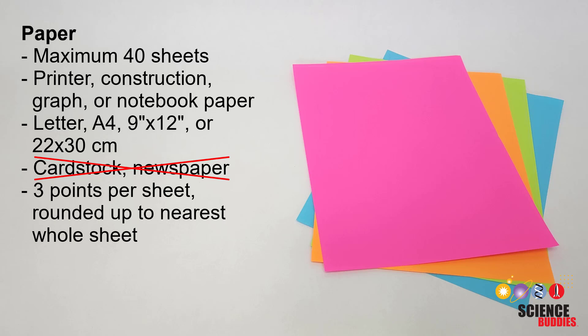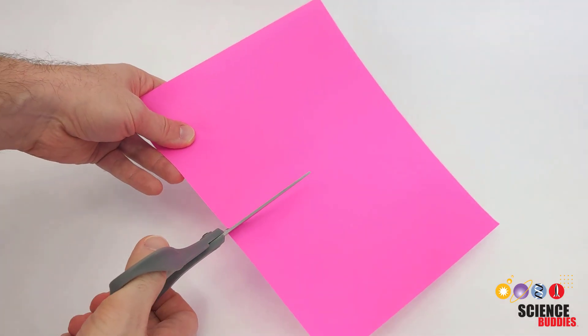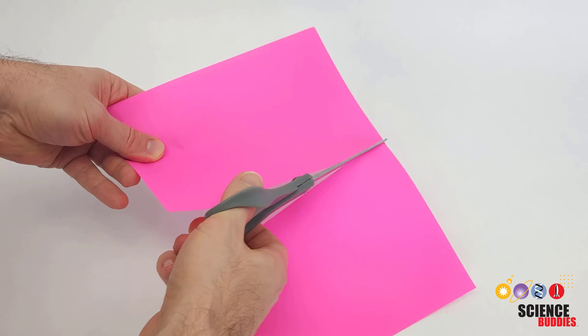Paper has a cost of three points per sheet rounded up to the nearest whole sheet. So if you cut a piece of paper in half and only use half of it, that still counts as an entire sheet.